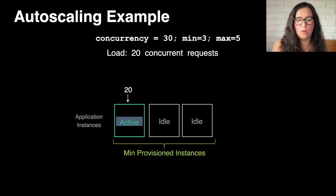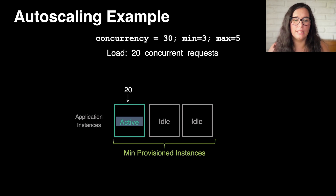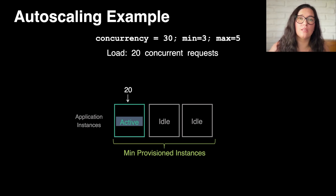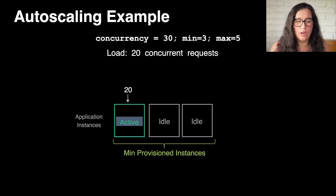Let's look at the auto-scaling part. We have the maximum concurrency set to 30, a minimum of three instances and a maximum of five. Currently we have 20 requests coming in, and we will only have one active instance — the other two instances are idle. They are provisioned but not really taking requests.